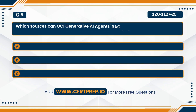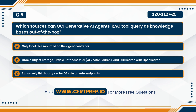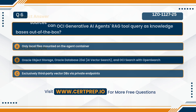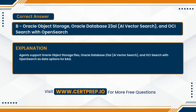Question six. Which sources can OCI Generative AI agents' RAG tool query as knowledge bases out of the box? A. Only local files mounted on the agent container. B. Oracle Object Storage, Oracle Database 23AI AI Vector Search, and OCI Search with OpenSearch. Or C. Exclusively third-party vector DBs via private endpoints. The correct answer is B. Agents support Oracle Object Storage files, Oracle Database 23AI AI Vector Search, and OCI Search with OpenSearch as data options for RAG.